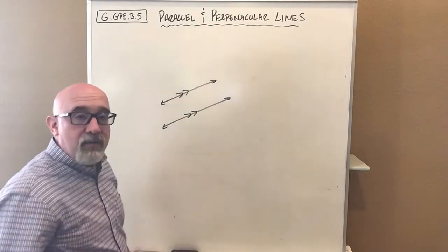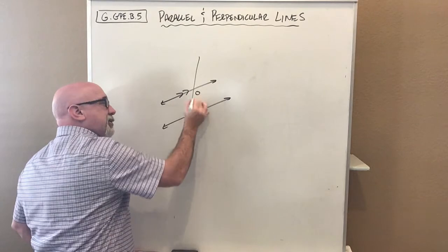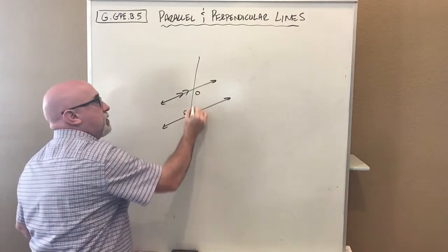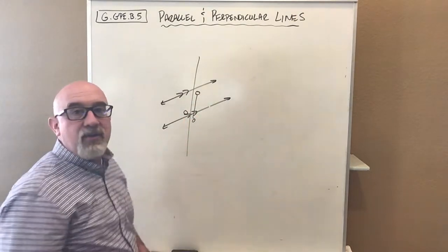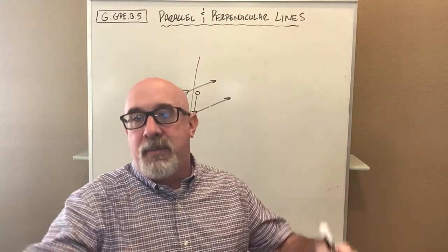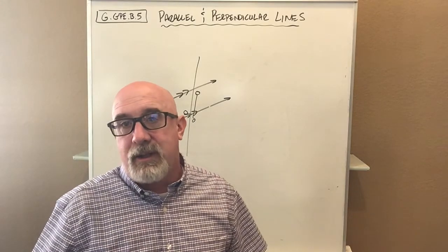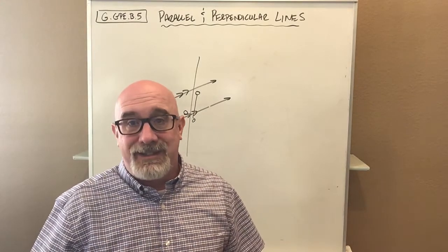Part of what we studied is alternate interior angles, corresponding angles, and those types of things. Let's take a step now and jump into the coordinate grid with our knowledge about parallel and perpendicular lines and see what happens.